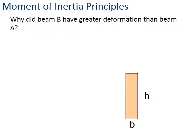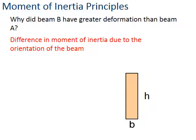So the reason that board B deflected more than board A has totally to do with the fact, because it's the same board and it's the same force, totally to do with the fact that it has a different moment of inertia. So let's learn how to calculate that.